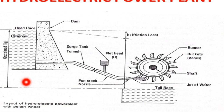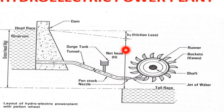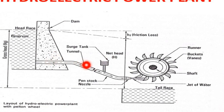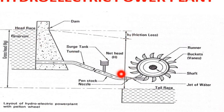If the turbine is fixed and the nozzle is fixed, we say net head. Gross head assumes no friction loss. So: gross head minus friction loss equals net head.